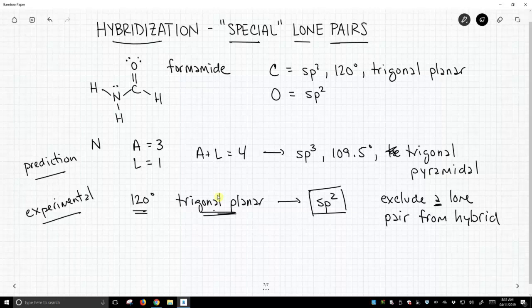And when I say a lone pair, it turns out that nitrogen only has one lone pair. But if we were dealing with an oxygen, we would only exclude one of the lone pairs. We leave the other lone pair in the hybridization count, this a plus l value that we had.